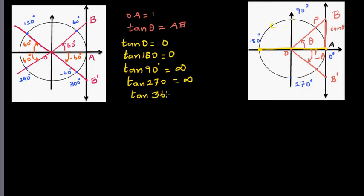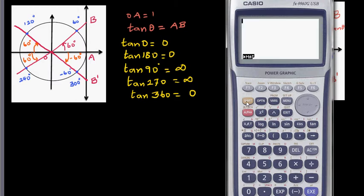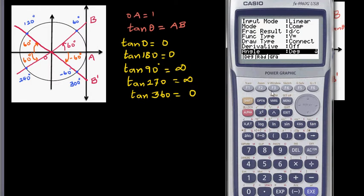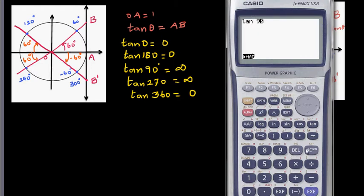Let me show these on the calculator. First go to the run menu and check your settings — mine defaults to radians, so let me change to degrees. tan 0 = 0, tan 180 = 0, tan 360 = 0. tan 90 gives an error — it's undefined. tan 270 is also undefined or infinity, and that's why the tan graph has asymptotes at 90° and 270°.